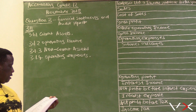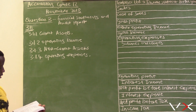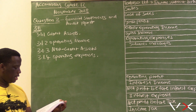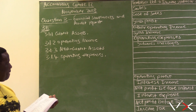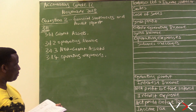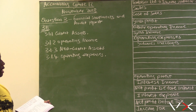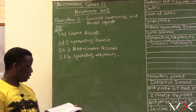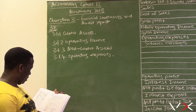To recap: 3.1.1 — trade and other receivables (debtors) are recorded in the statement of financial position under current assets. 3.1.2 — adjustment of provision for bad debts, if it is a decrease, is recorded in the income statement as operating income. 3.1.3 — fixed deposit maturing in three years is more than 12 months, so it is a non-current asset. 3.1.4 — trading stock deficit, which represents lost or stolen stock, is recorded under operating expenses.